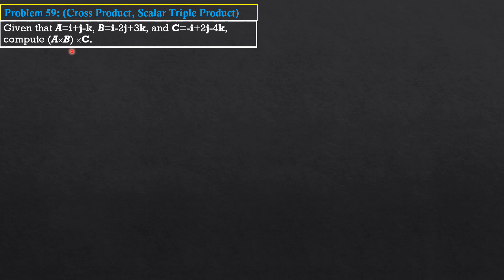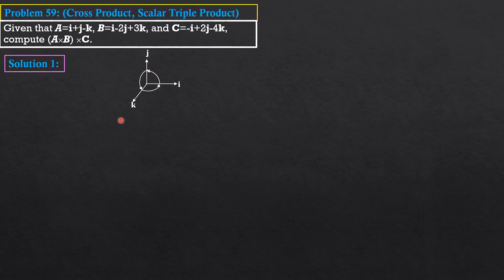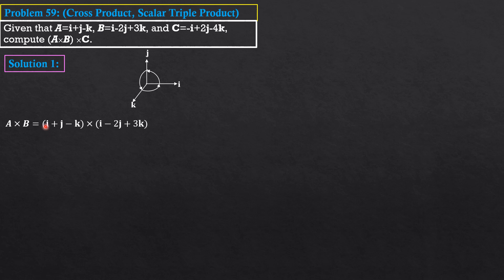I will use a guide for cross product without a calculator, using the basic approach first before checking with the shortcut. Applying the right-hand rule: I cross J = K, J cross I = −K, J cross K = I, K cross J = −I, K cross I = J, I cross K = −J. Also, I cross I = 0, J cross J = 0, K cross K = 0. Now I'll expand in detail: 1×1 I cross I...